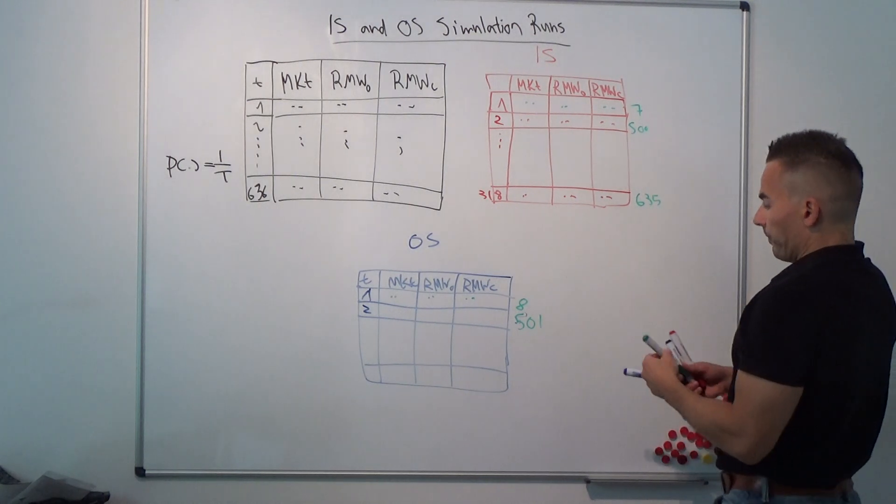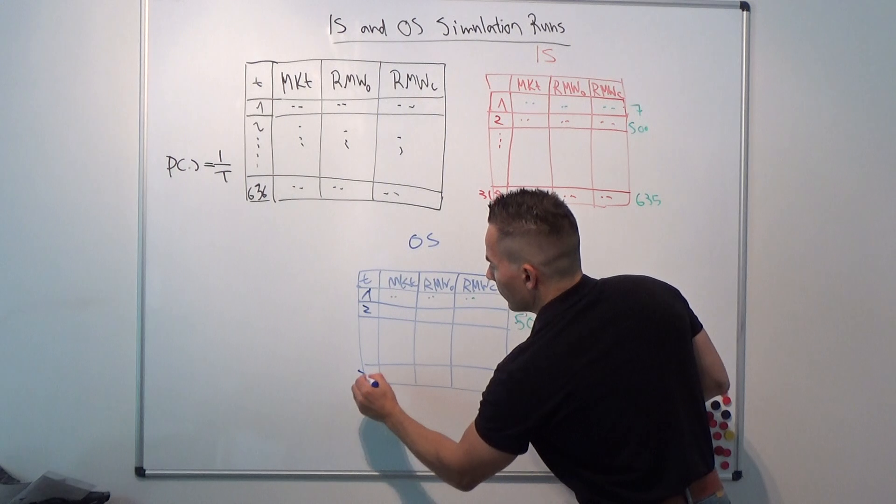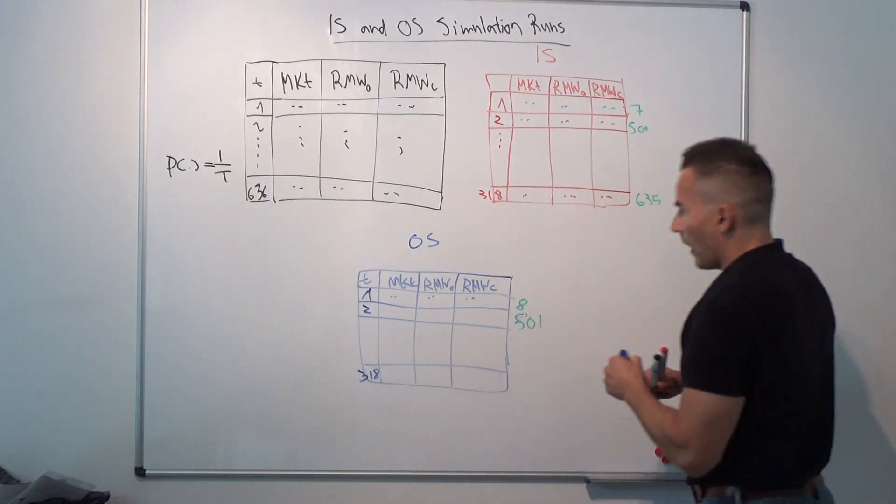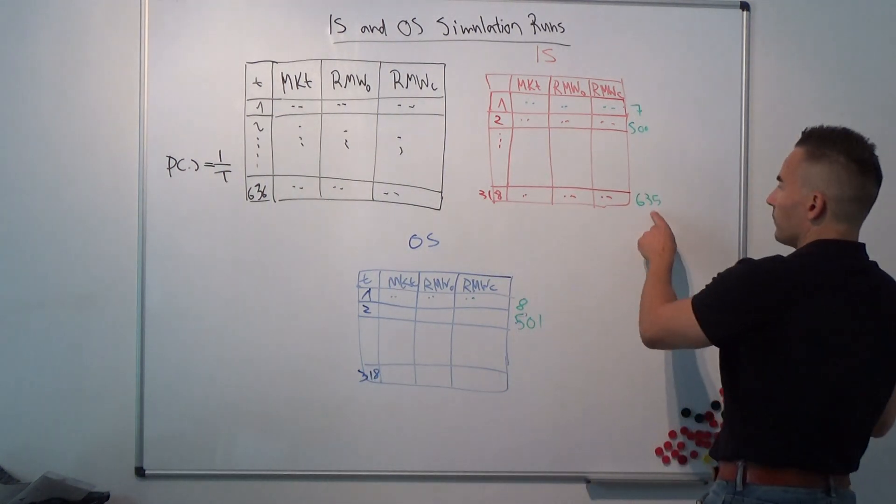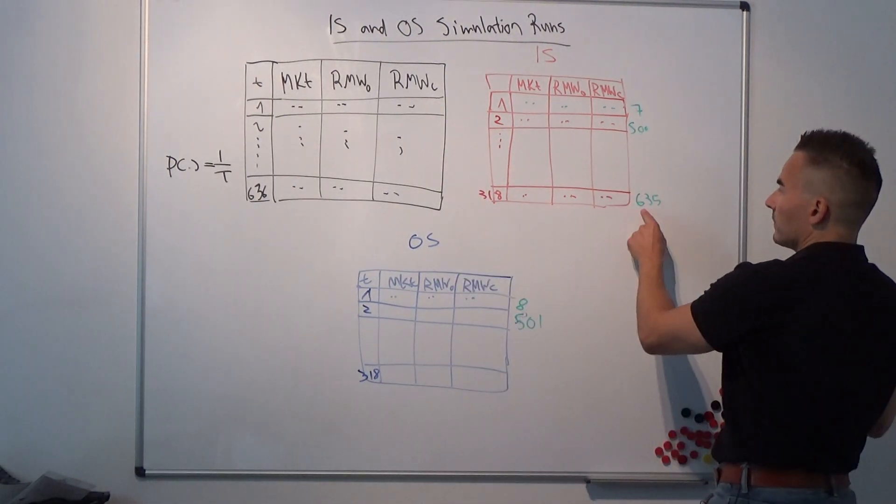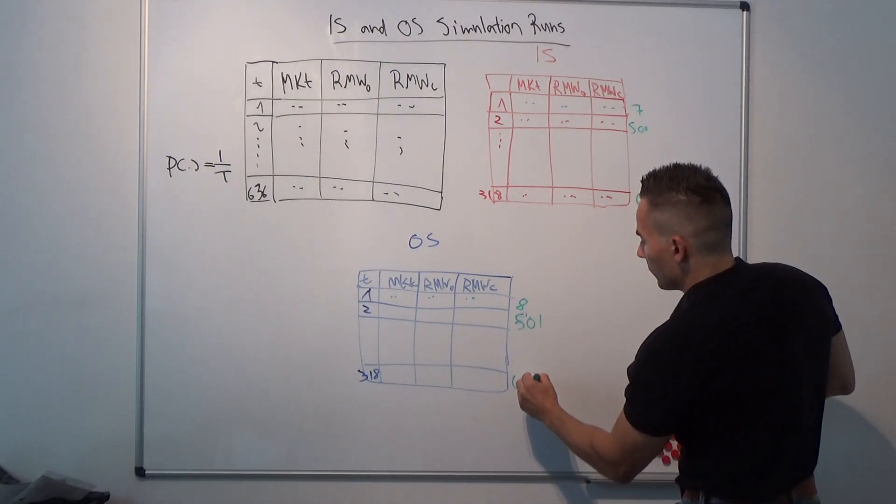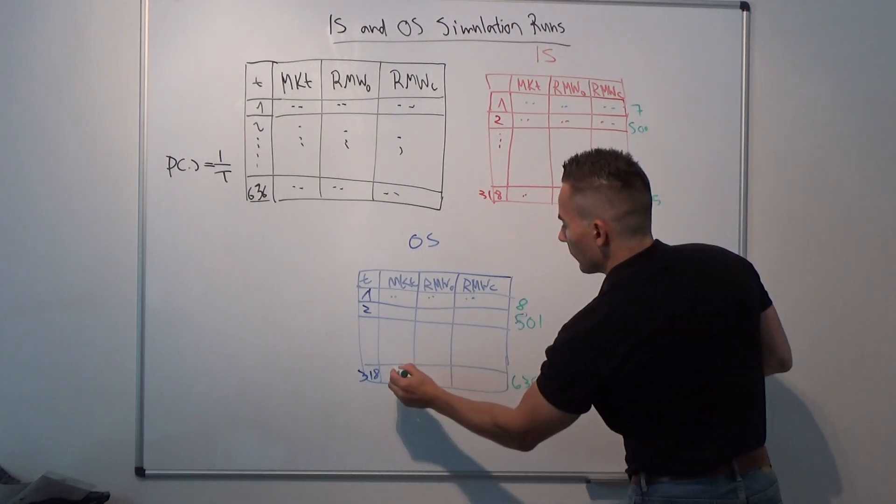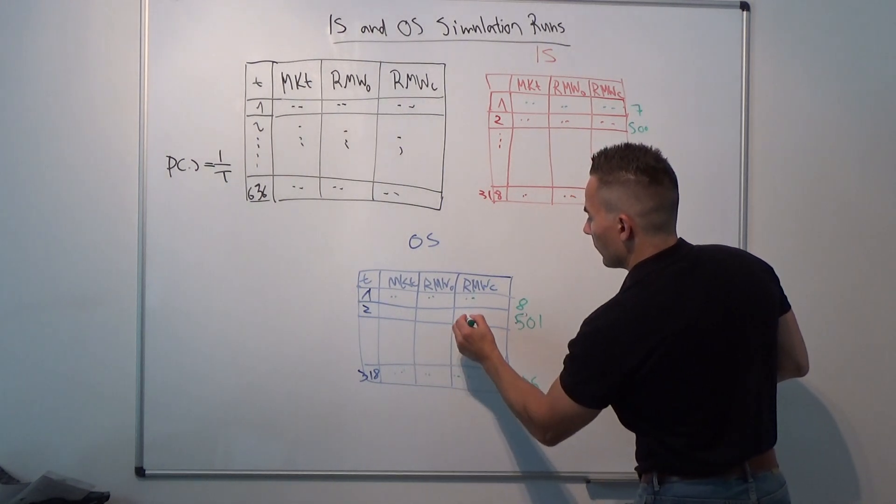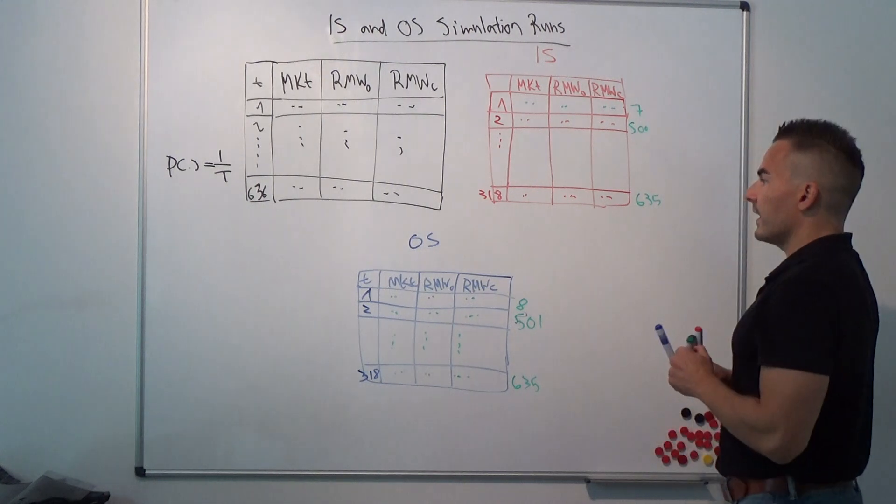That's why the last row, row 318, in our out-of-sample matrix is correspondingly the last row in the original data sample, because it's row 635 in the in-sample.